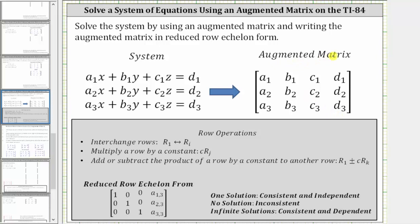Once we have the augmented matrix, we perform row operations to write the augmented matrix in reduced row echelon form.